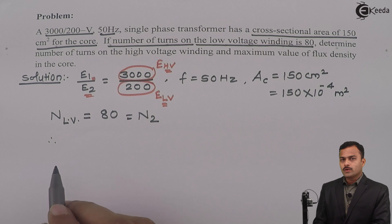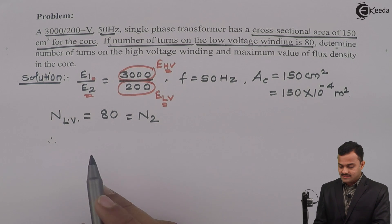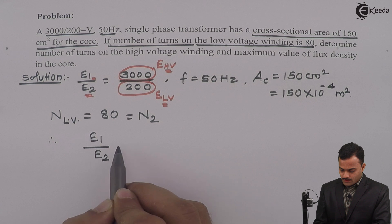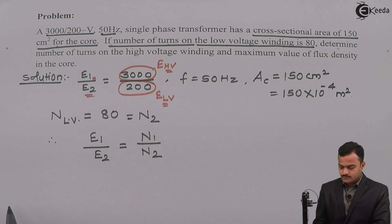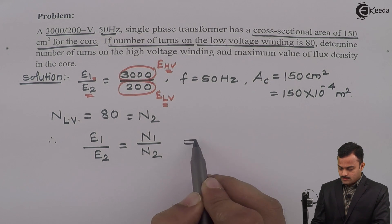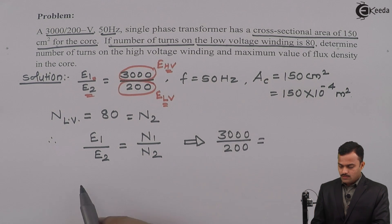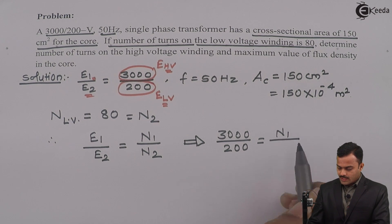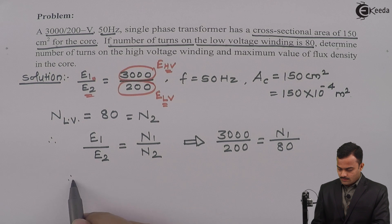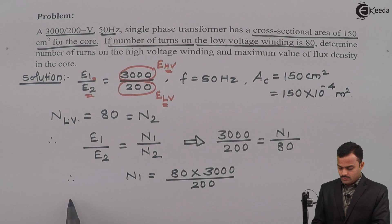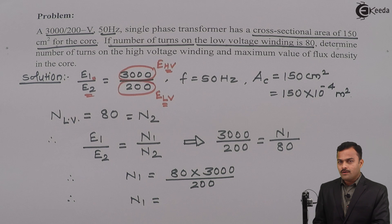Instead of N low voltage side, I can say it is the number of secondary turns N2. Now, to get N1 or the number of turns on the high voltage side, I will use the relationship E1 by E2 equals N1 by N2. Substituting all known values: E1 is 3000, E2 is 200, N2 is 80. So N1 equals 80 multiplied by 3000 divided by 200, giving the number of turns on the high voltage side equal to 1200.